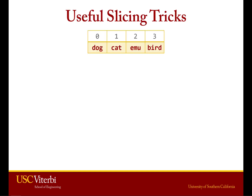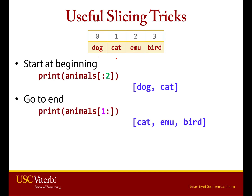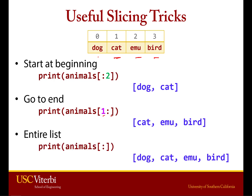A couple of useful slicing tricks. If you want to slice just the beginning, you can say colon and then where you want to end — it automatically starts at 0. So animals[:2] gives you dog and cat. If you want to go to the end automatically, give your starting value and leave off the value after the colon — animals[1:] gives you cat, emu, bird, all the way to the end. And if you want the whole list as a slice, just put a colon with no other numbers, and it returns all elements: dog, cat, emu, bird.